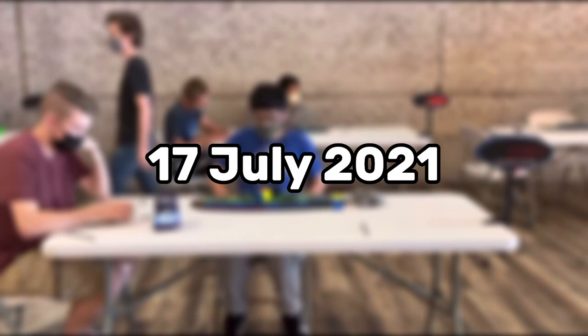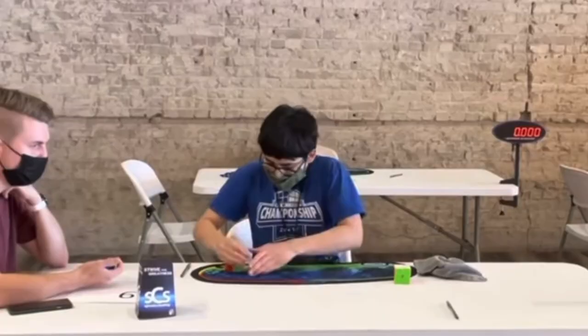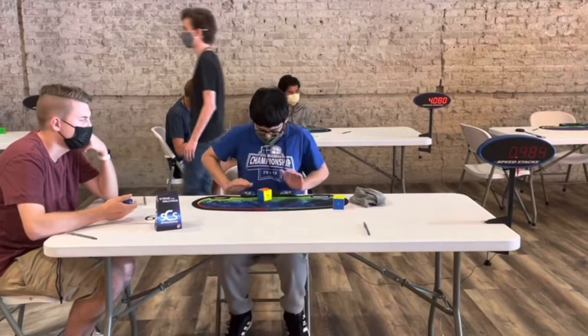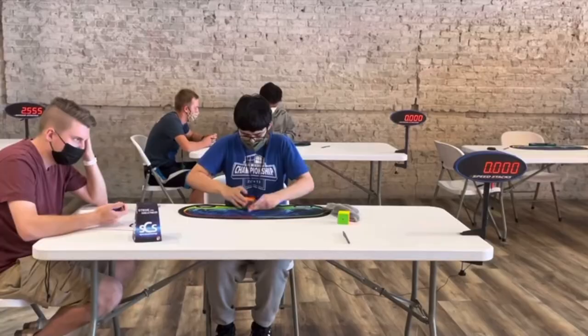But on the 17th of July in 2021, Zayn was unlucky enough to get a sub 1 world record average fail. His first time was a 0.98, and his second time was a 2.47. Then, Zayn gets a 0.9 and a 0.92.